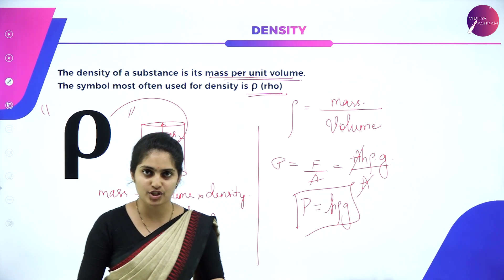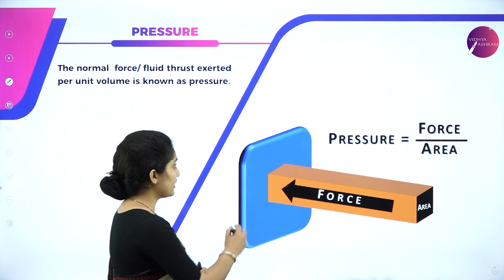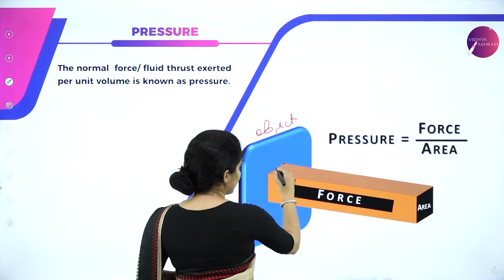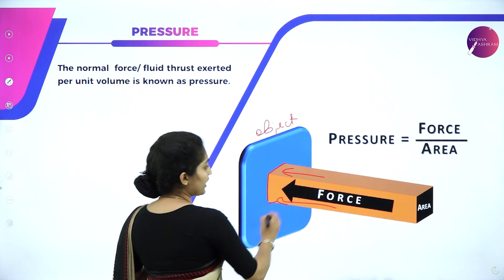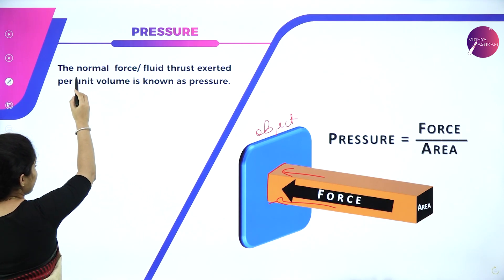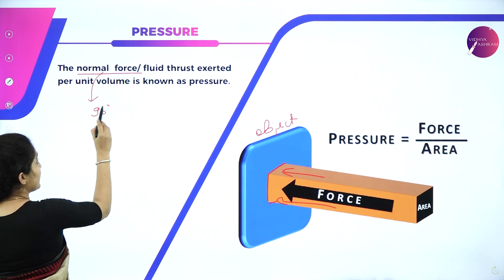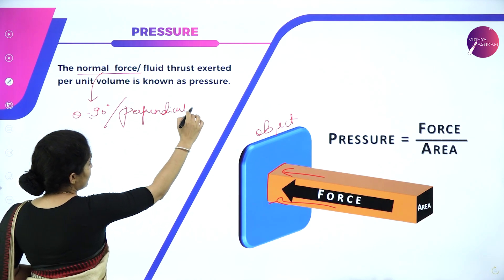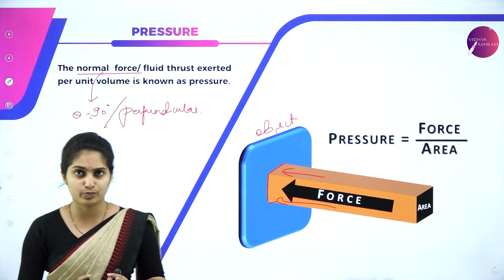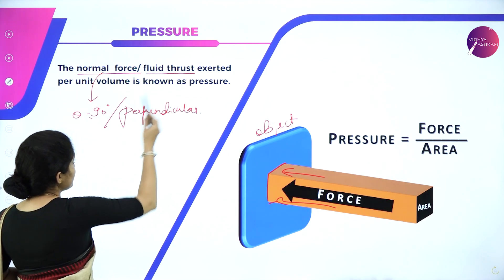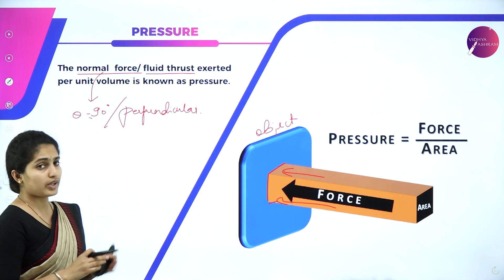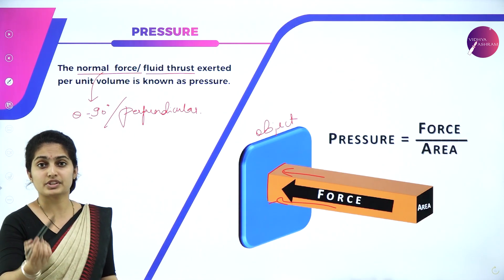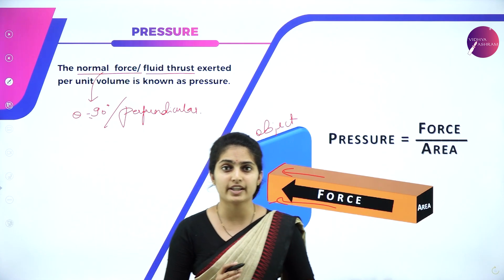Pressure means force per unit area. The force exerted per unit area is called pressure. The force is normal — meaning at 90 degrees, or perpendicular to the object. The normal force, or fluid thrust, exerted per unit area is known as pressure. So pressure is always the force acting perpendicular to the object.